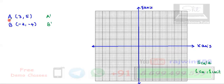Now I will plot the coordinates of point A which is 3, 5. So this is 1, 2, and 3 along the x-axis, then 1, 2, 3, 4, 5 along the y-axis. This is the location of point A.